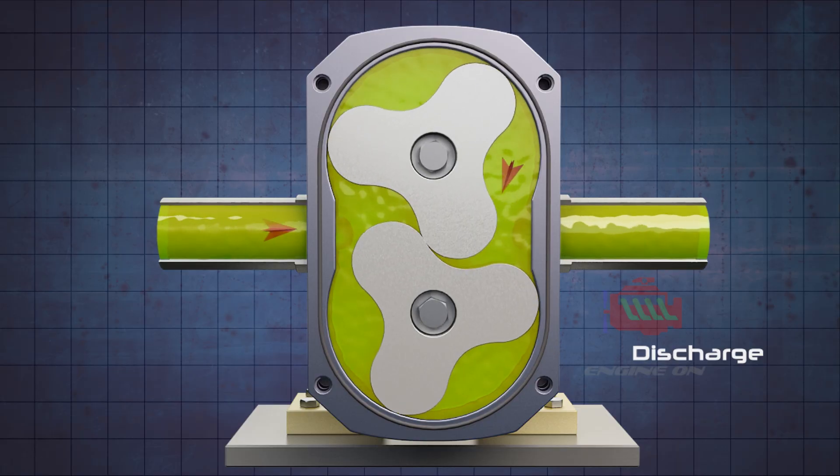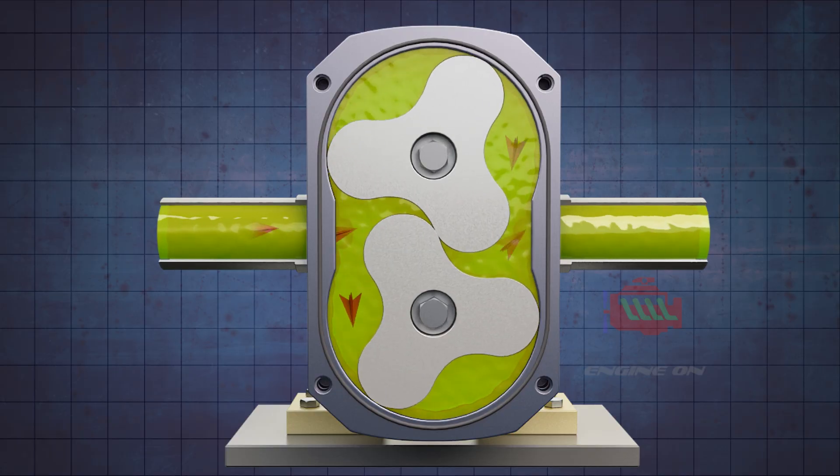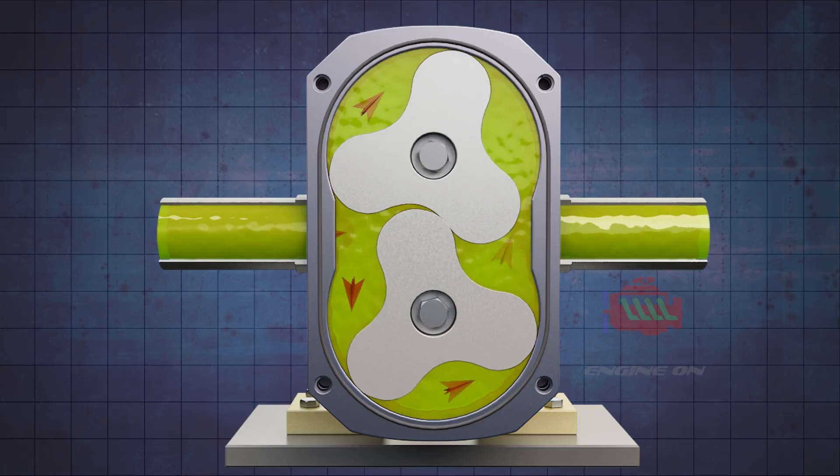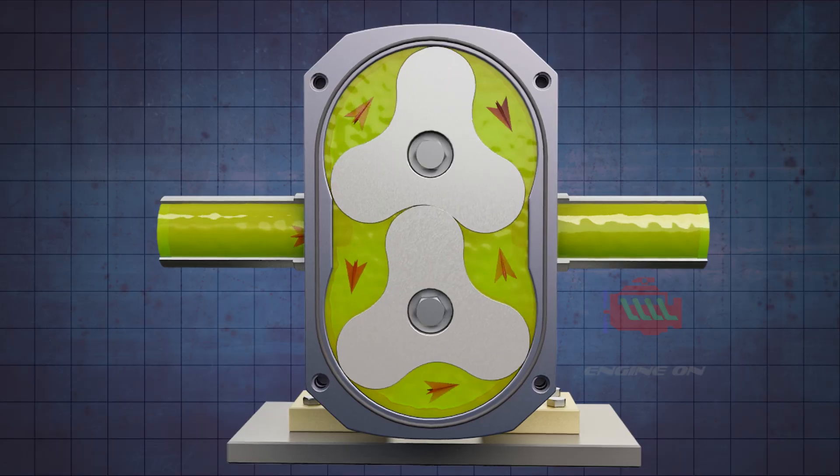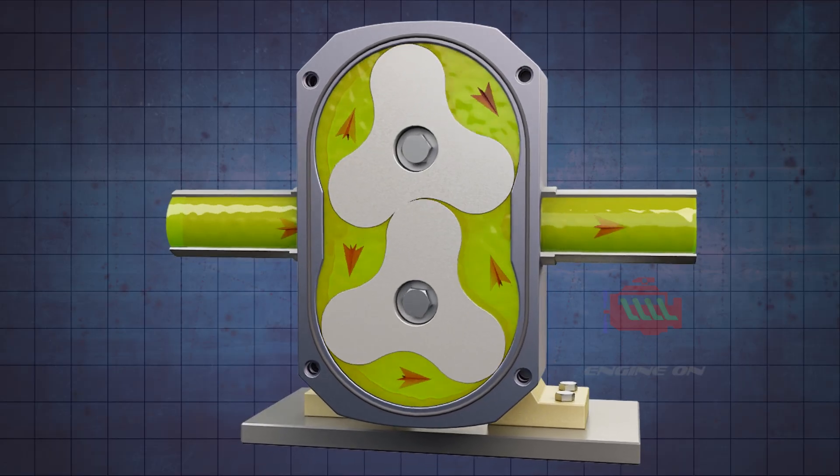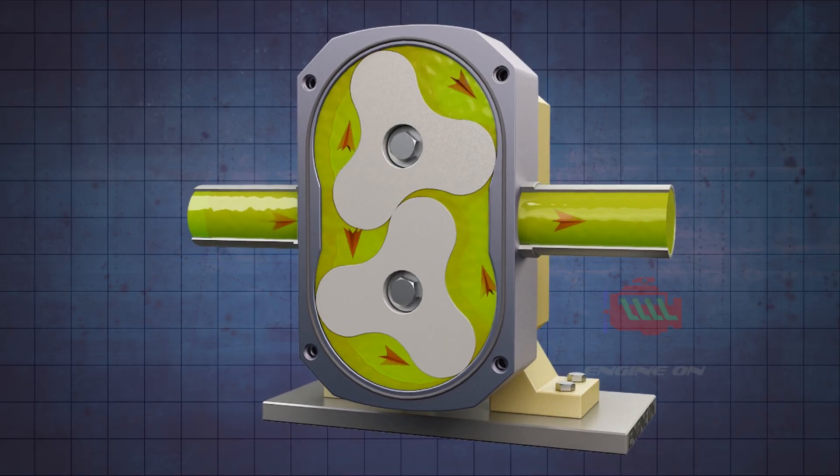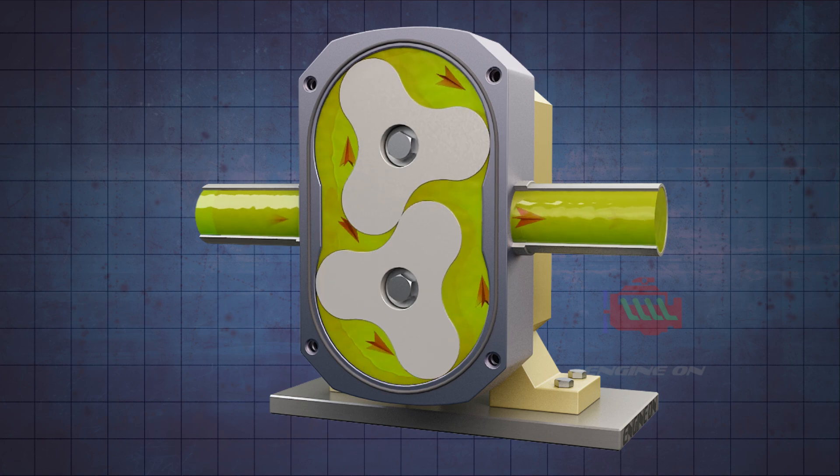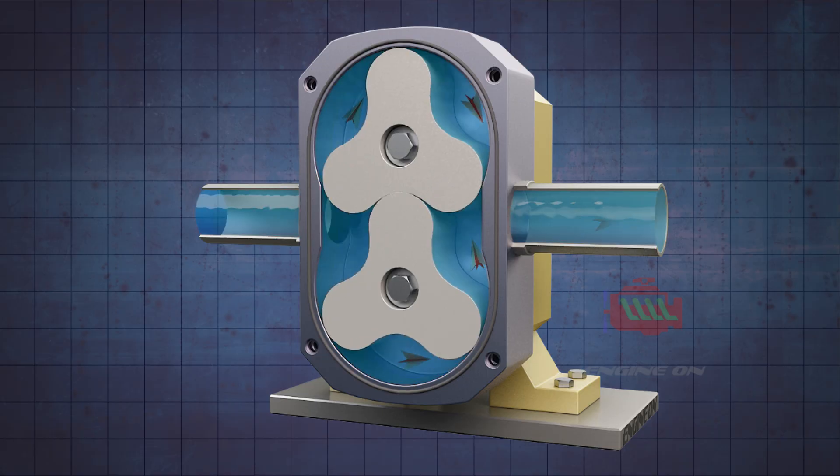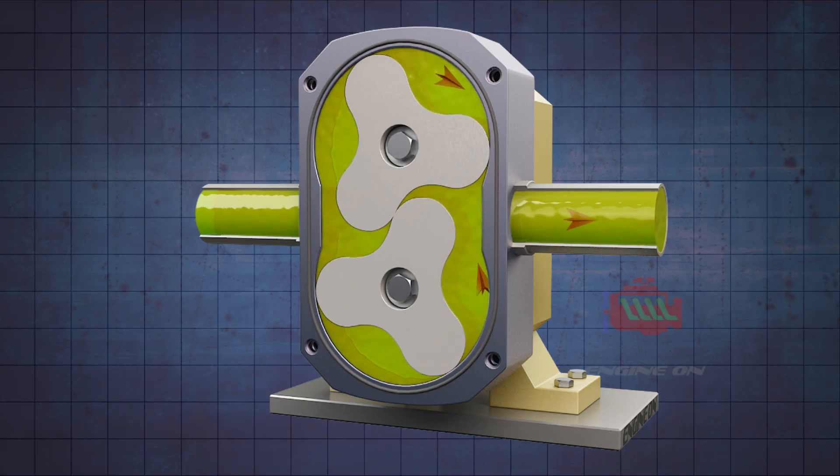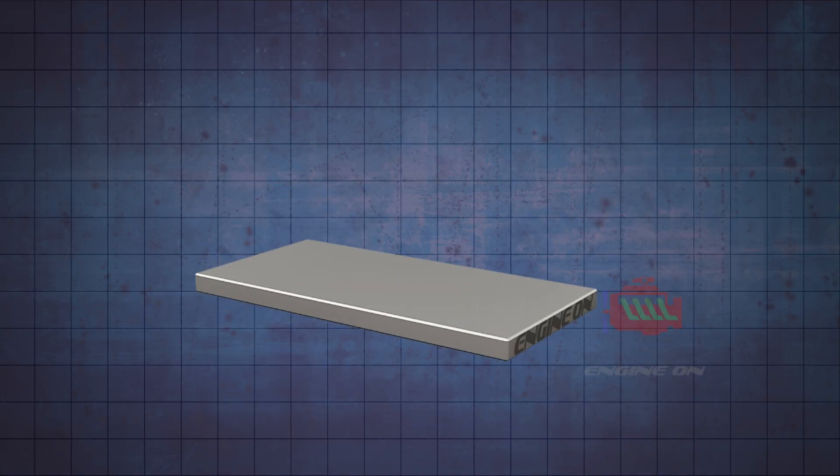Lobe pumps are widely used in food, pharmaceutical, chemical, and biotechnology industries due to their gentle handling of liquids and hygienic design. They transfer viscous or delicate products such as sauces, jams, cheese, fruit pulp and chocolate, creams, syrups, lotions, and gels for consistent quality. Let's see the part assembly process.